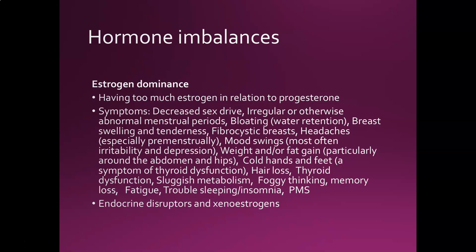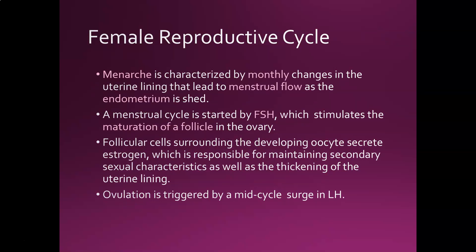Menarche is the scientific term for the monthly changes in the uterine lining that lead to menstrual flow. Basically, every month you build up your endometrium to maintain pregnancy; if pregnancy doesn't happen, it's shed, and then rebuilt. A menstrual cycle is started by FSH — follicle-stimulating hormone — which rises first and stimulates follicle maturation in the ovary. The follicular cells surrounding the developing oocyte then secrete estrogen, which is higher in the first part of the cycle and helps thicken the uterine lining. Ovulation is then triggered by a mid-cycle surge in luteinizing hormone.